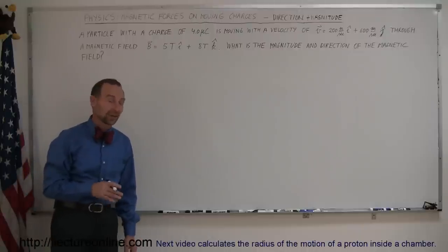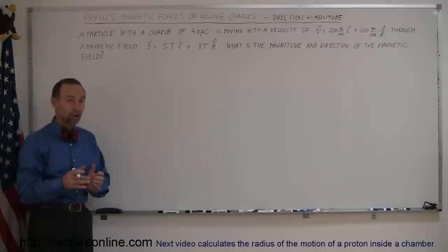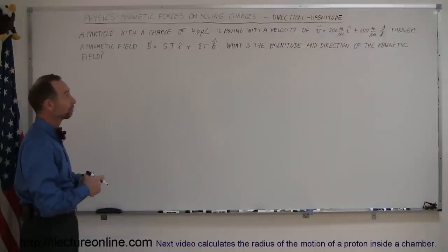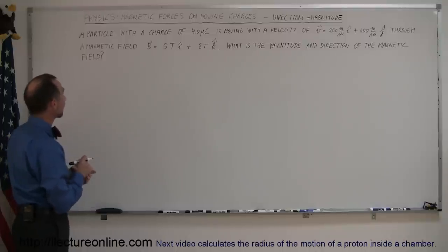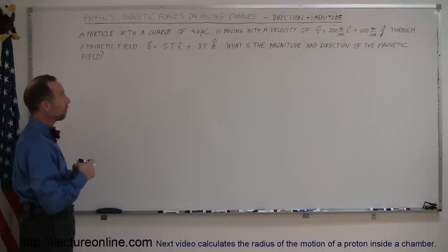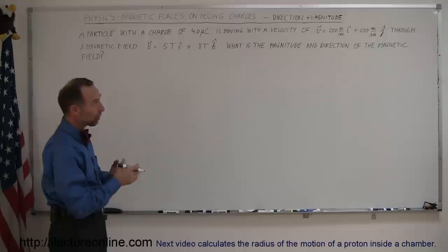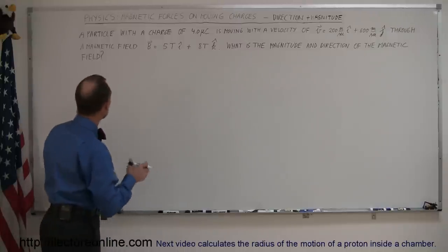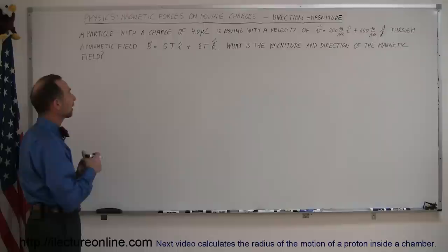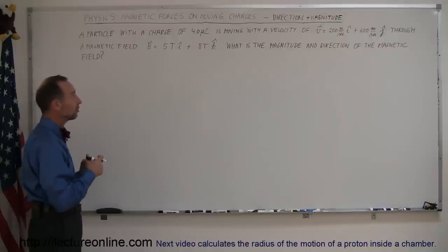Welcome to iLecture Online. Here's another example of how you figure out the forces acting on a charged particle moving through a magnetic field. We want to find the direction and magnitude of that force. We have a particle with a charge of 4 microcoulombs, moving with a velocity of 200 meters per second in the x direction and 600 meters per second in the y direction, through a magnetic field of 5 teslas in the x direction and 8 teslas in the z direction.